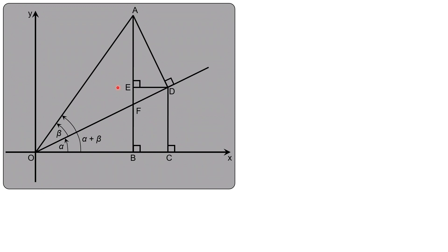Let's start talking about relationships formed in this diagram, beginning with the x-axis and the lengths of line segments OB, BC, and OC. We know that segment OB is equal to OC minus BC — take the whole length OC, subtract BC, and you get OB. We'll write out that relationship: OB equals OC minus BC, and I'll highlight that in blue because I'm going to use it in a moment.